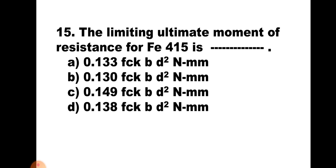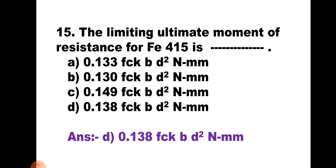Question number 15: The limiting ultimate moment of resistance for FE415 is: A. 0.113 FCK BD² N·mm, B. 0.130 FCK BD² N·mm, C. 0.149 FCK BD² N·mm, D. 0.138 FCK BD² N·mm. The limiting moment of resistance factor varies with the grade of steel. For FE415, it is 0.138 FCK BD² N·mm. The correct answer is D. We will continue the remaining questions in the next part.